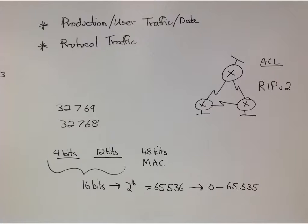We tried to define production, user traffic and data versus protocol data. Being able to distinguish between the two. We used the example of RIP. Talked a little bit about ACLs, RIP version 2 between the routers.